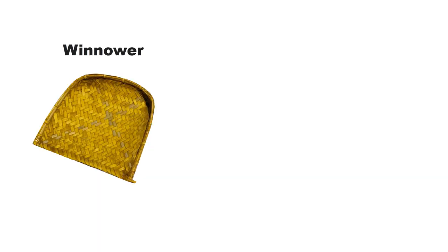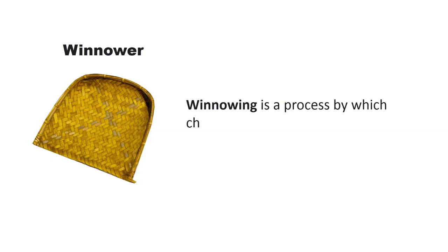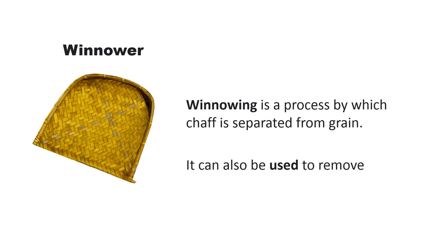Winnowing is a process by which chaff is separated from grain. A winnowing tool is used for this purpose. It can also be used to remove pests from stored grains.